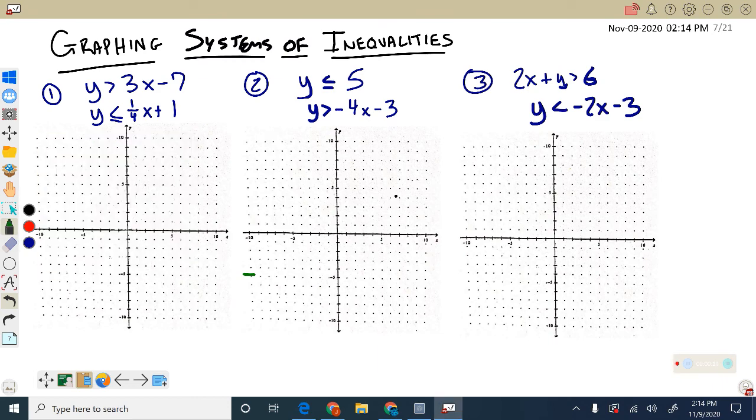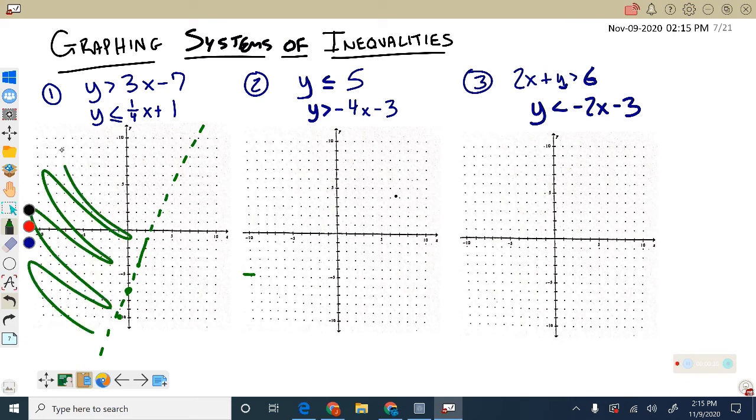So to do this, we just need to graph one inequality first. This first one begins at negative 7, and then I'd be going up 3 to the right one, or down 3 to the left one. So we have a dashed line, and we said that we'd be shading above that because we have a greater than sign, so I'd be shading this whole portion.